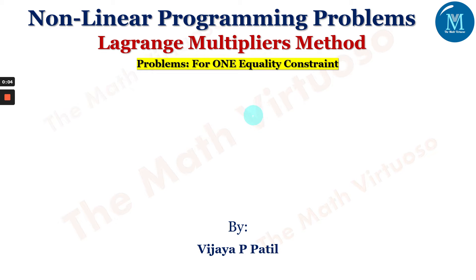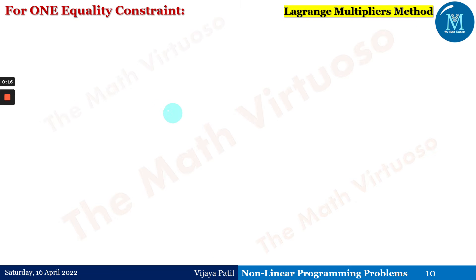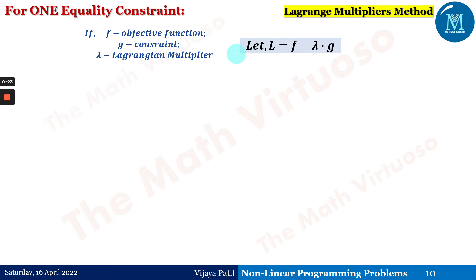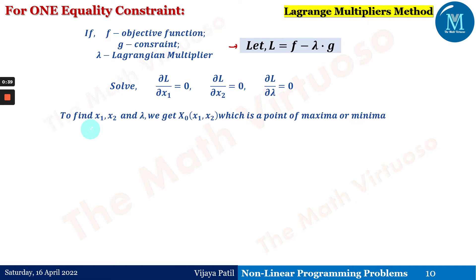Hello and namaste. In continuation with non-linear programming problems, after the detailed discussion on the Lagrangian multiplier method, we are moving ahead with problems. We are dealing here with the one equality constraint kind of questions. For one equality constraint, suppose f is the objective function, g is the constraint, and lambda is the Lagrangian multiplier. We form the Lagrangian function as f minus lambda times g, then solve this L with respect to x1, x2, and lambda, equating to 0 to get the stationary point x0 = (x1, x2), which is a point of maxima or minima.